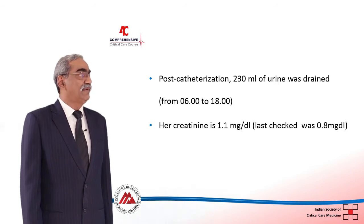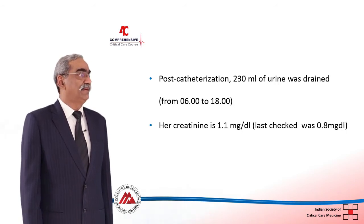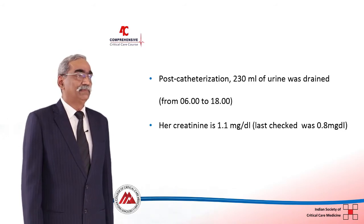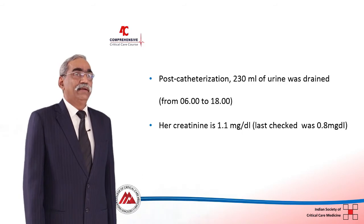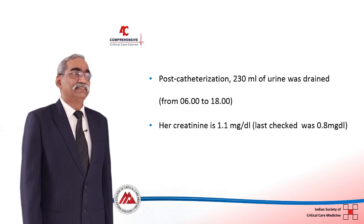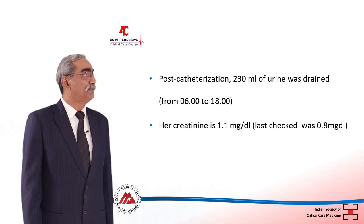Her creatinine is 1.1 milligrams percent and her previous creatinine was 0.8 milligrams per deciliter. So how does one proceed — what does one make of this? Is this to be called AKI even though the creatinine is essentially normal?